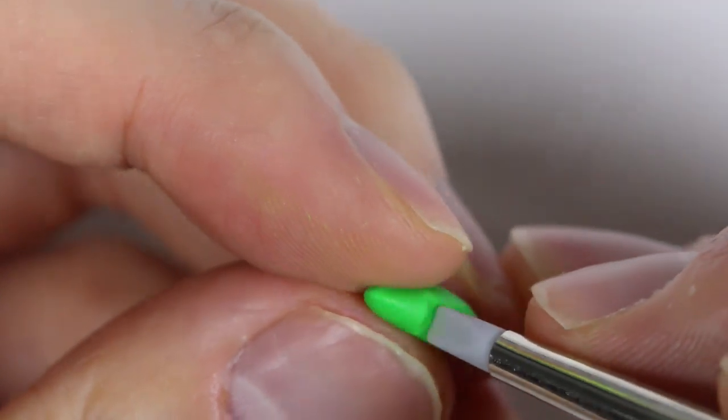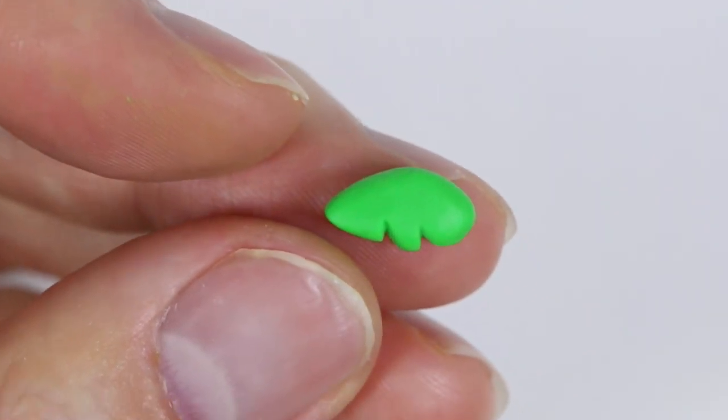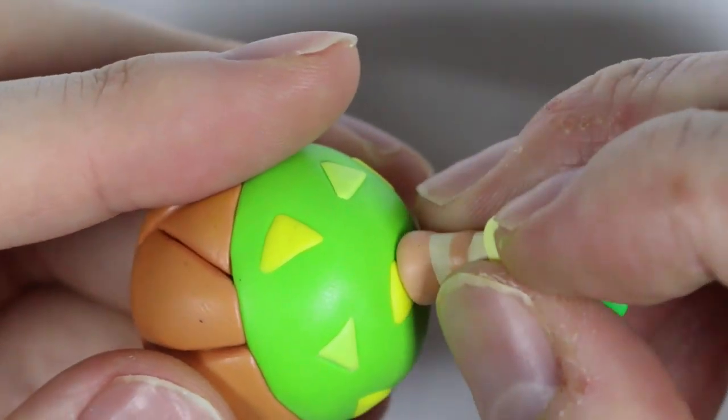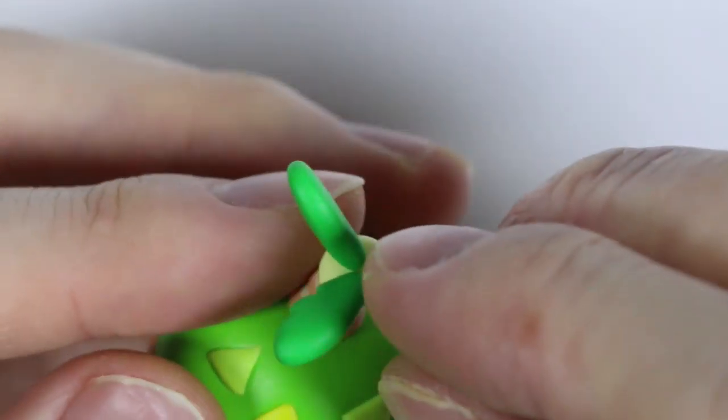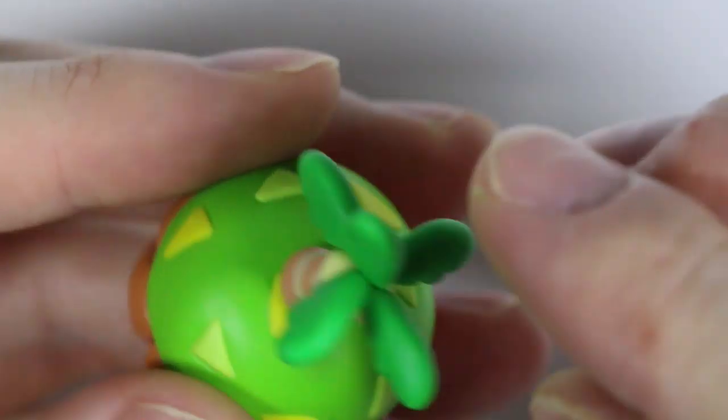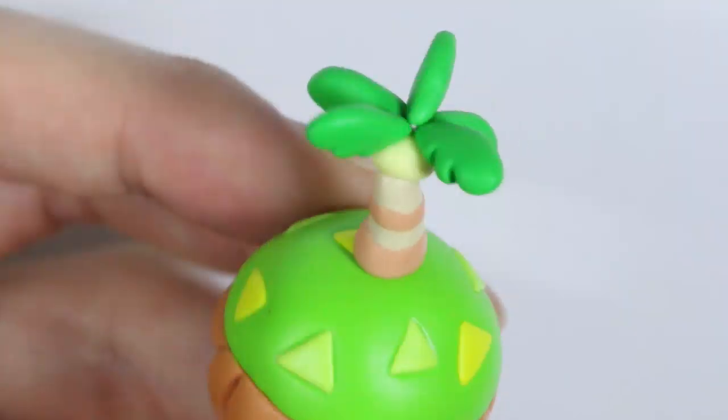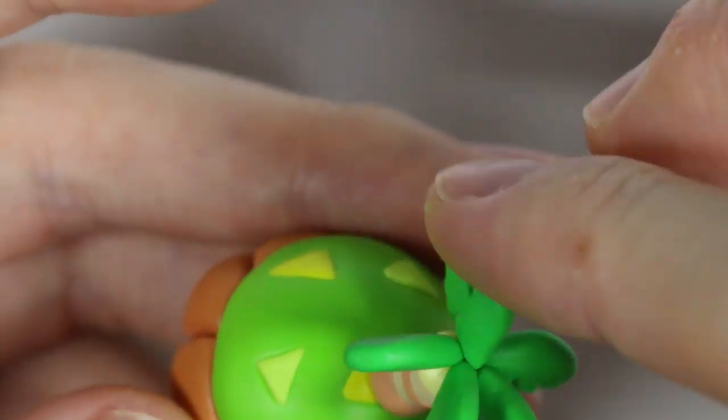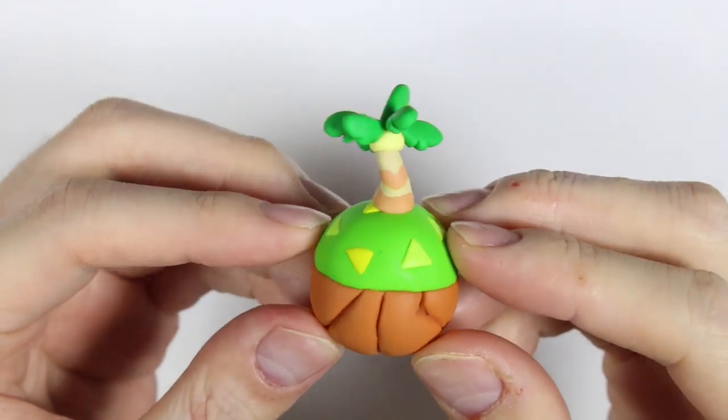Then using my color blending tool, we're going to make the indents a little bit more rounded. And here we have our palm tree leaves and then we're going to attach them to the yellow part of the palm tree. And once assembled we want to bake according to label instructions.